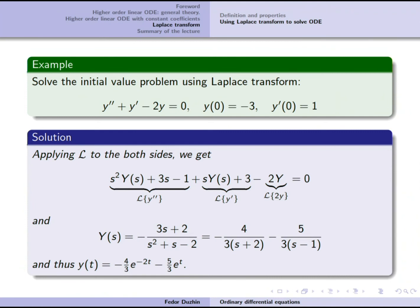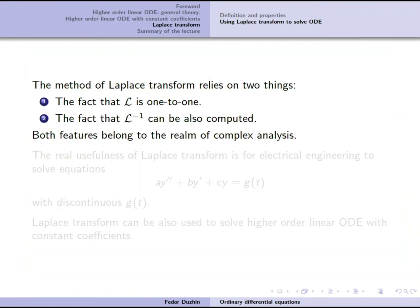The method of Laplace transform is based on two things. First, the Laplace transform is one-to-one, meaning it sends different functions to different functions. If we know the Laplace transform of our function, we can hypothetically recover the original function.